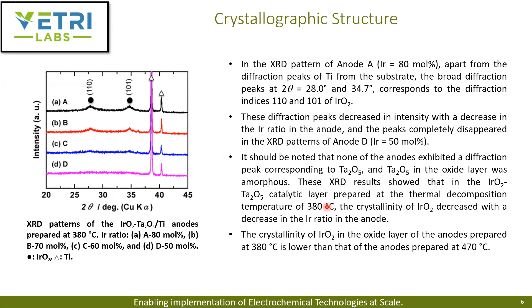XRD analysis was performed on the iridium oxide/tantalum oxide/titanium anodes prepared at low temperature, for four different iridium mole percentages from 80 to 50 percent. For the 80% sample, two broad diffraction peaks appeared at about 28 degrees and 34.7 degrees corresponding to iridium oxide. These peaks decreased in intensity as the iridium ratio decreased, and completely disappeared at 50 mole percent iridium. This was attributed to the amorphous tantalum oxide layer, showing that crystallinity decreases with decreasing iridium ratio — in contrast to anodes prepared at 470 degrees Celsius.